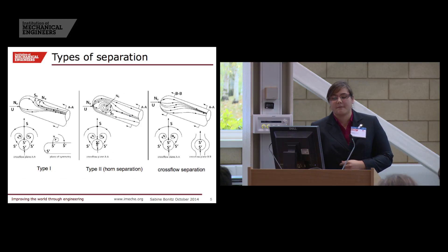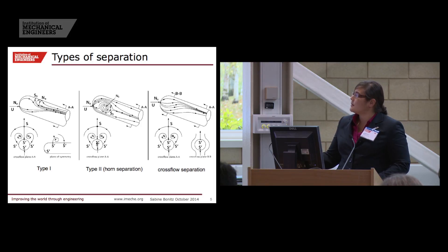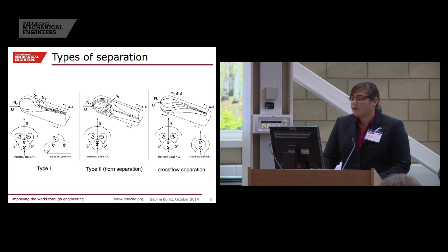I will show that a little bit later on an example how that can be applied. Looking into the literature, three types of separation are reported. The first one, called type one separation, sometimes also bubble separation, is a separation type which starts from a saddle point and goes into a separation line. The second one, which is also sometimes called a horn separation, leaves the surface from a focus structure, from a swirling structure. And the third one is often referred to as cross-flow separation. Then contrary to the other two types, it doesn't have any characteristic points in the flow pattern, but is characterized by a convergence of the streamlines, which are then leaving the surface as a vortex sheet.